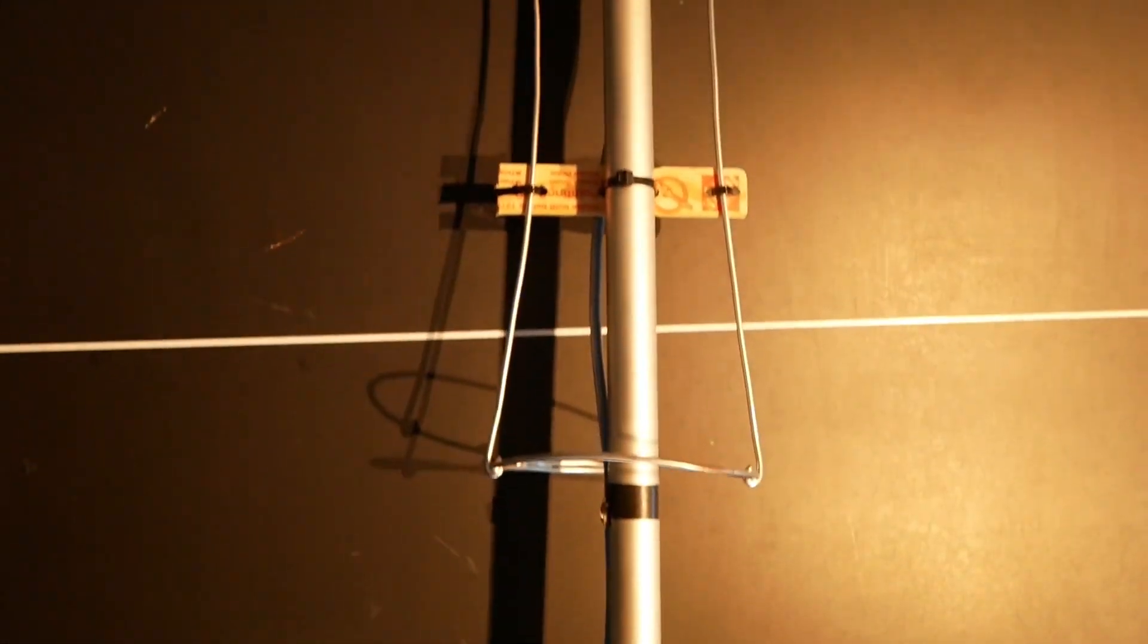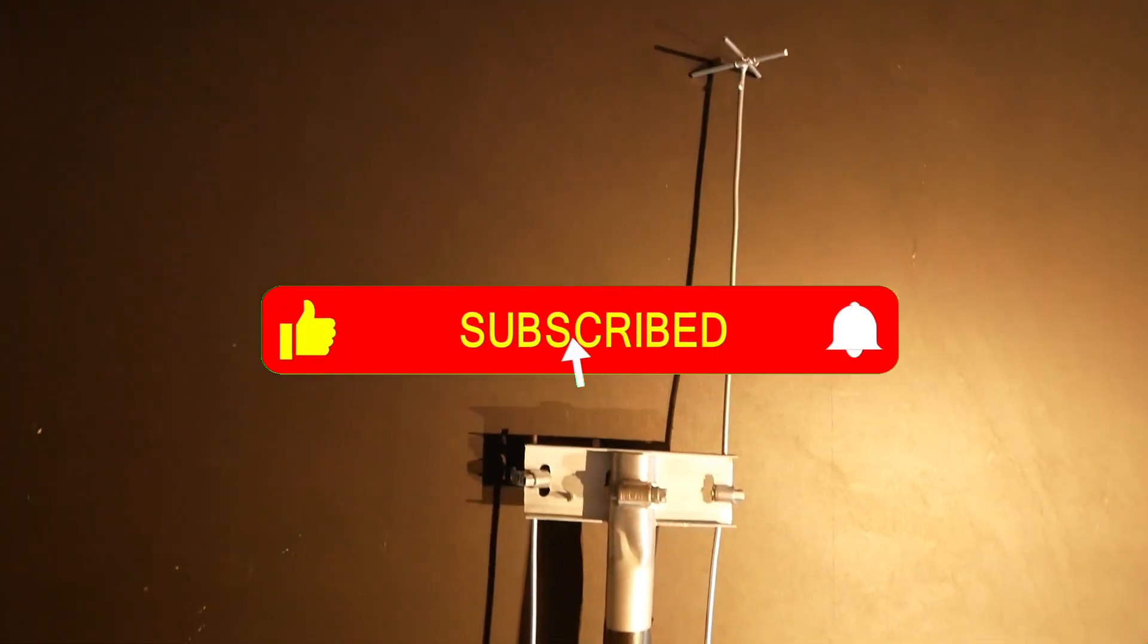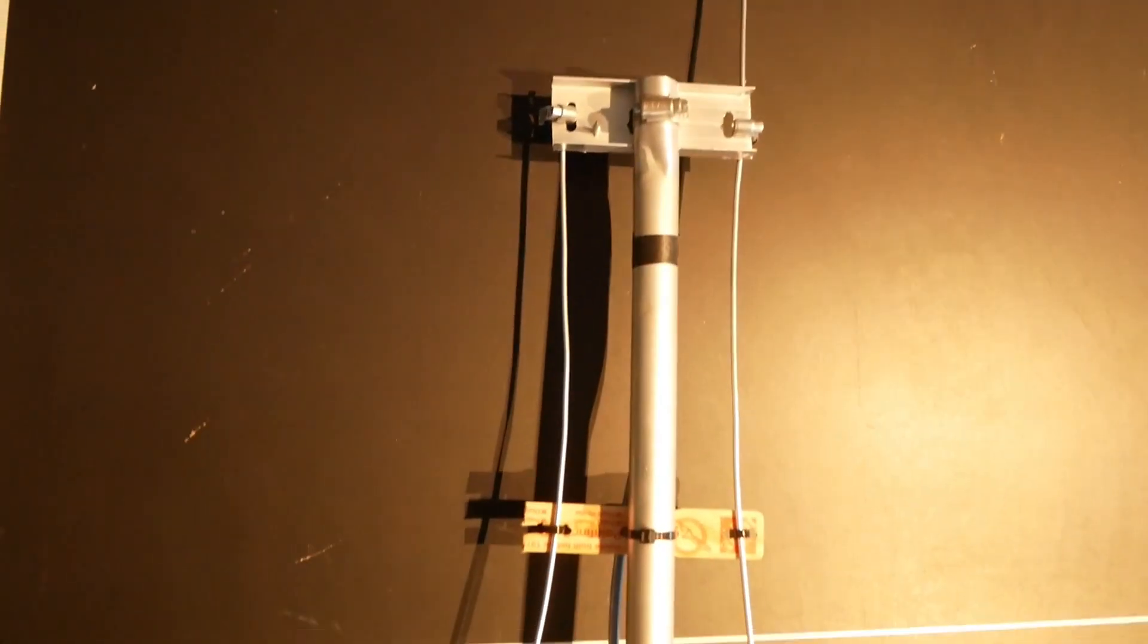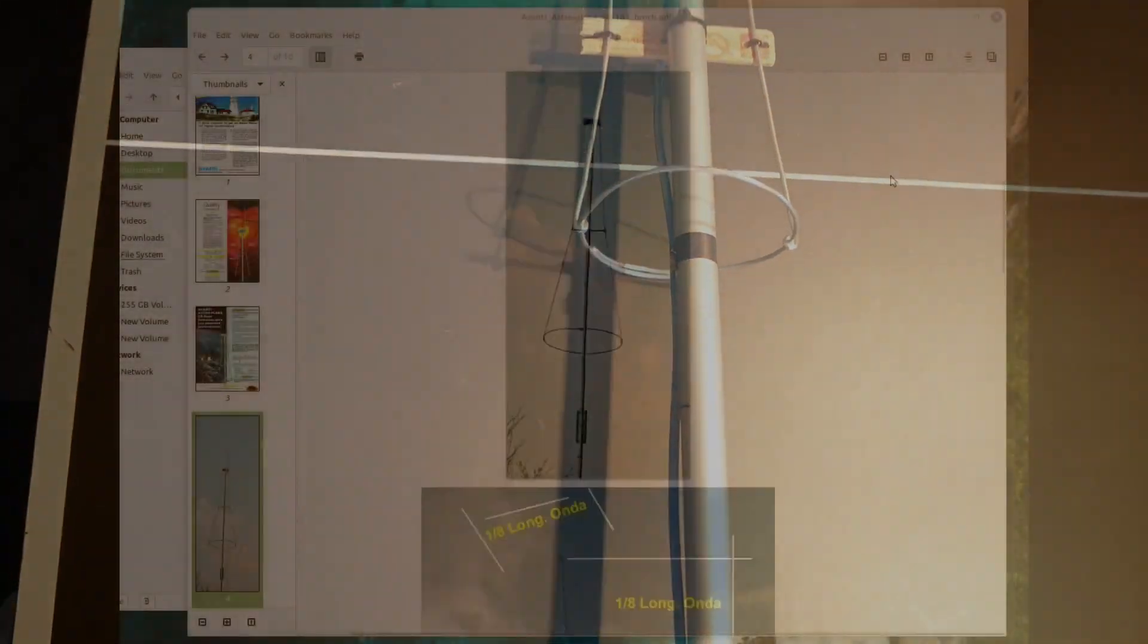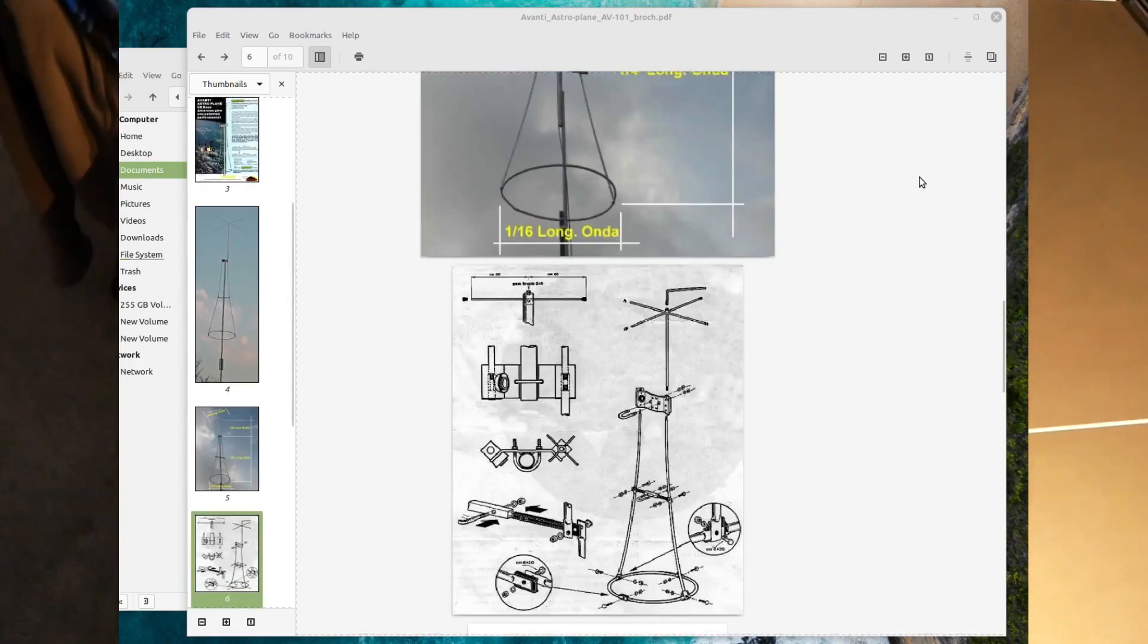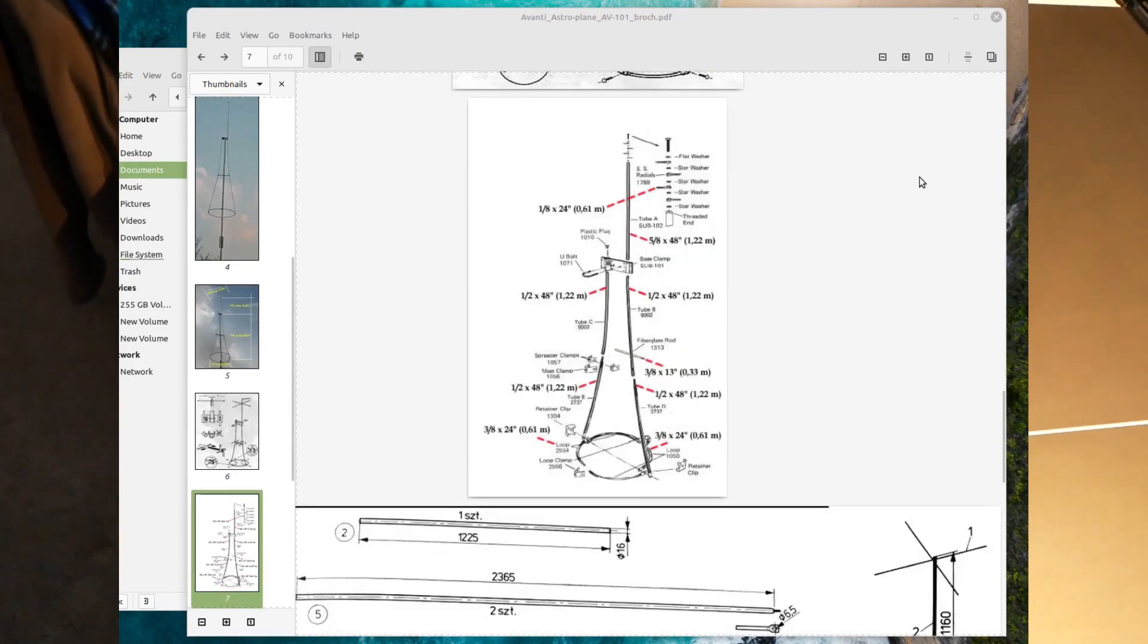Alright, what the heck is this thing? If you're an old CBer, you might recognize the shape. Way back in the late 60s, Avanti Corporation made an antenna called the Astroplane. It would be for CB or 11 meters, so it would have been quite a bit bigger than this one.